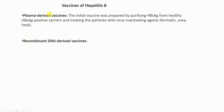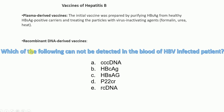We have vaccines available for hepatitis B virus, and these vaccines are preventive. We have two kinds: plasma-derived vaccines and recombinant DNA-derived vaccines, used for prevention purposes. Finally, I have a knowledge challenge question: based on our discussion about hepatitis B virus, which one of the following cannot be detected in the blood of an HBV-infected patient? Option A: cccDNA, B: HBcAg, C: HBsAg, D: P22CR, or E: rcDNA. Thank you for your attention.